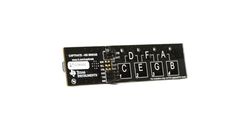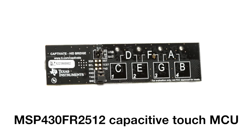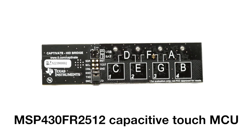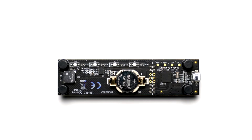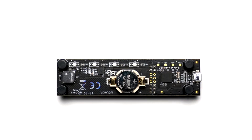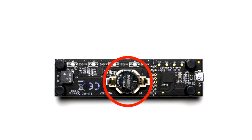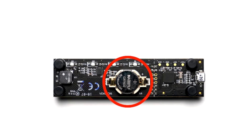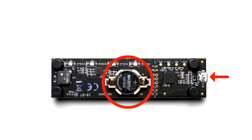The board includes a pre-programmed ultra-low power MSP430 FR2512 capacitive touch MCU. The CAT Mini Board is battery powered via a replaceable 3 volt lithium coin cell, but can also be powered via the microUSB connector.